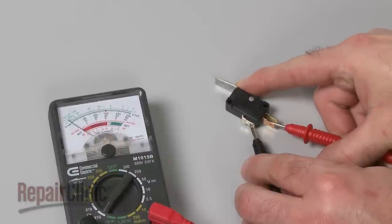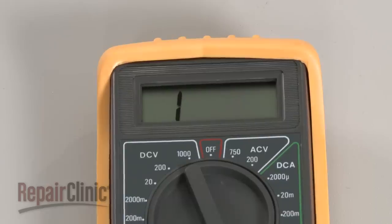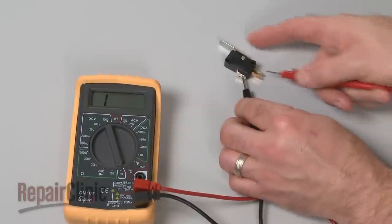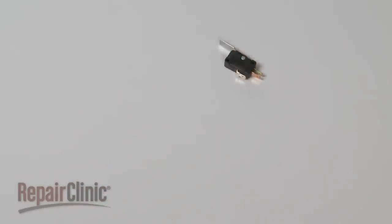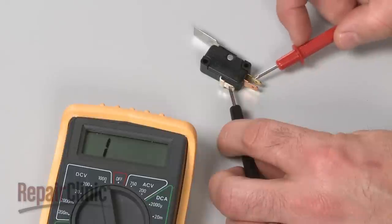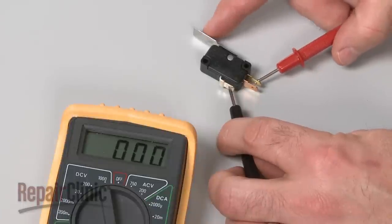If the needle does not move, or the digital display does not change significantly, there is no continuity, which means the switch is defective. Repeat the test for the normally closed terminal to determine if it has continuity.